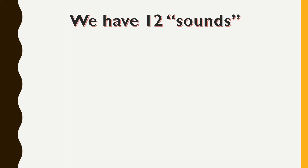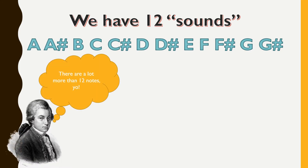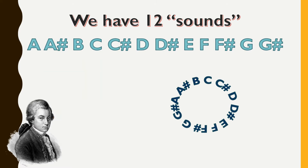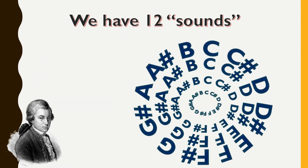They're called semitones — 12 notes: A, A sharp (which could also be called B flat), B, C, and so on all the way through G sharp. There are actually more than 12 — it's cyclic. Starting at A, next is A sharp, then B, all the way through G, G sharp, and after G sharp is A again. But it's not the same A — it's another A, and those A's just keep going on forever and ever.